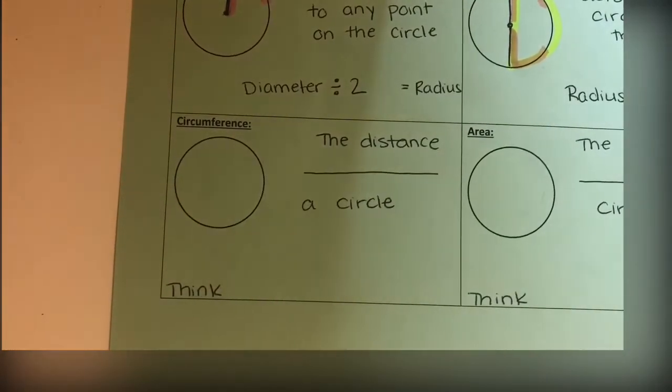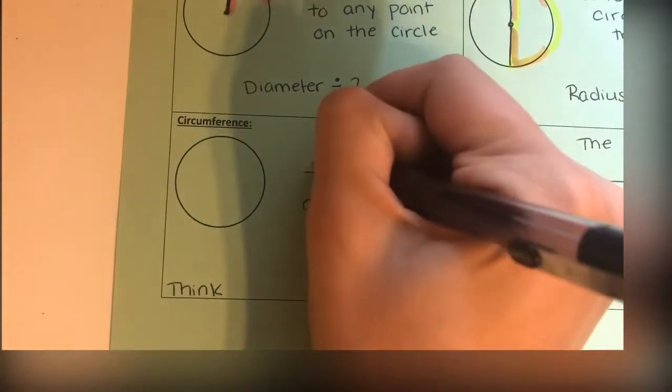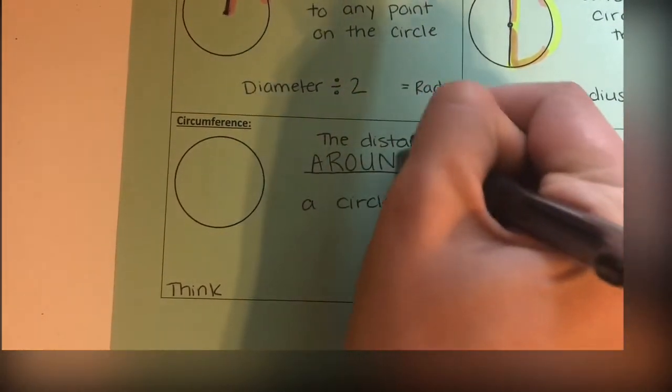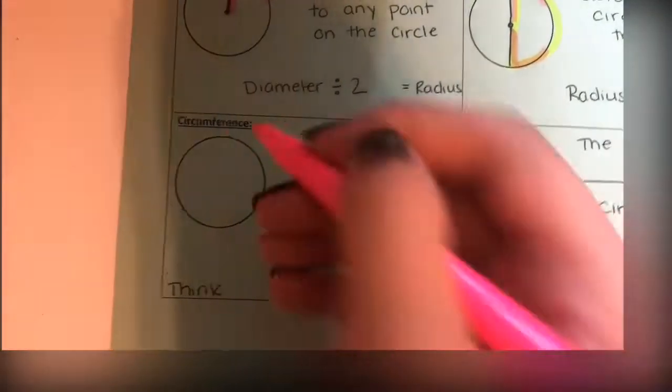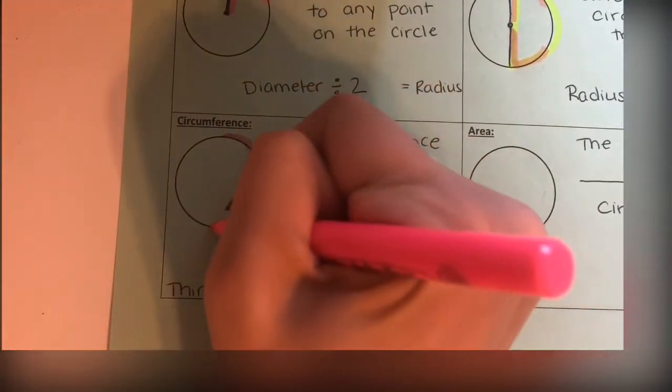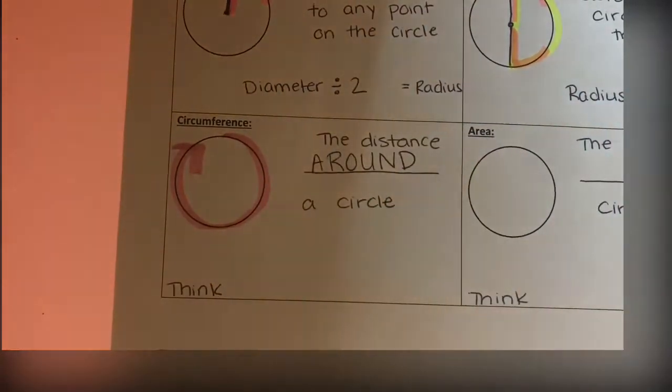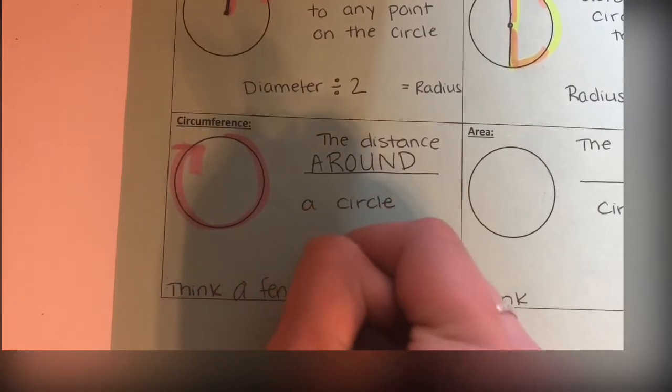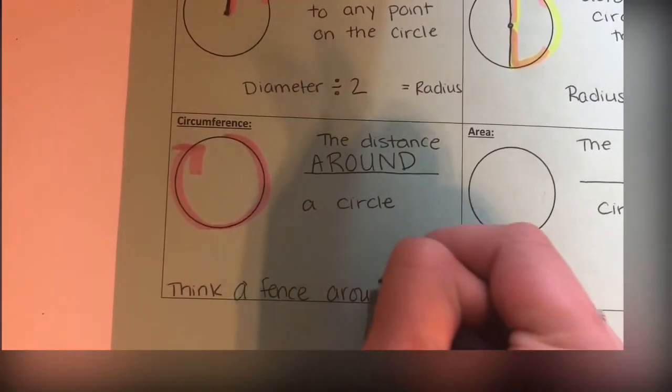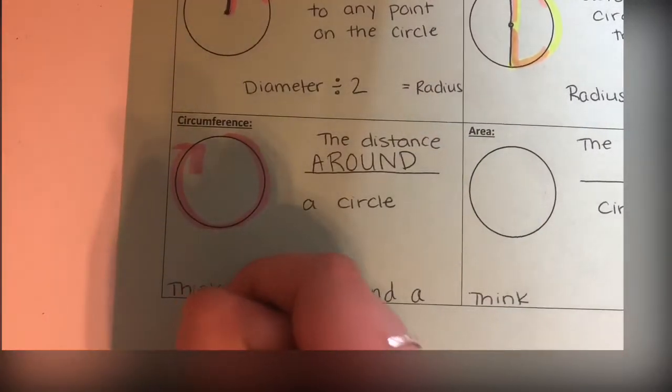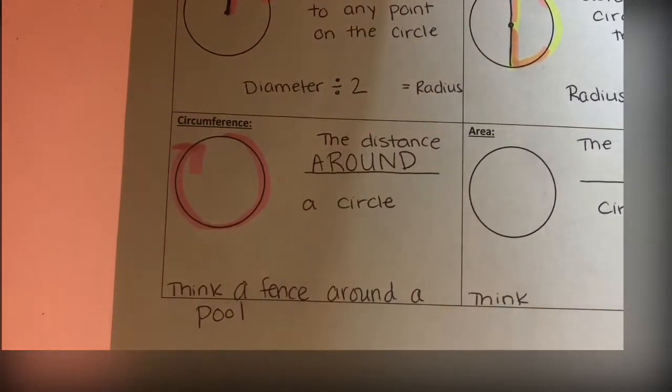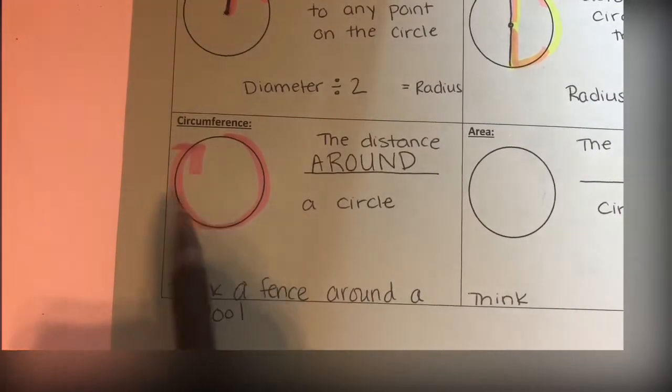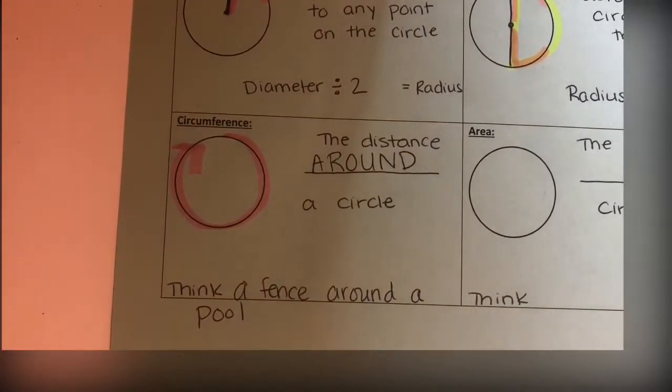It's calculating how long around is it. When I think of circumference, I like to think of a fence around a pool. When we're calculating for circumference, we have a formula that we need to know: C equals π times the diameter, C = πd. Now, we haven't seen π before.